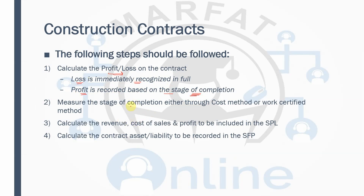The second step is to measure the stage of completion, either through the cost method or the work certified method, to determine what percentage of the work is completed. The third step is to calculate revenue, cost of sales, and profit to include in the statement of profit or loss. The fourth step is to calculate the contract asset and liability: if you have provided more work but received less payment, recognize an asset; if you have done less work but received more payment, record a liability.